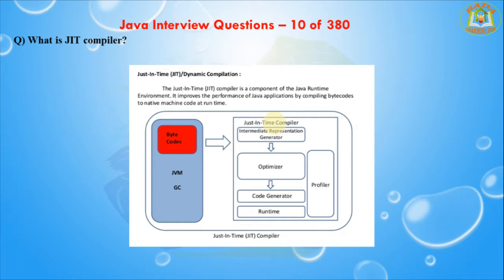In the past, most programs written in any language had to be compiled and sometimes rewritten for each computer platform. One of the biggest advantages of Java is that you only have to write and compile a program once. The Java virtual machine on any platform will interpret the compiled bytecode into instructions understandable by the particular processor. The virtual machine handles one bytecode instruction at a time using the Java Just-In-Time compiler, which compiles the bytecode into platform-specific code.